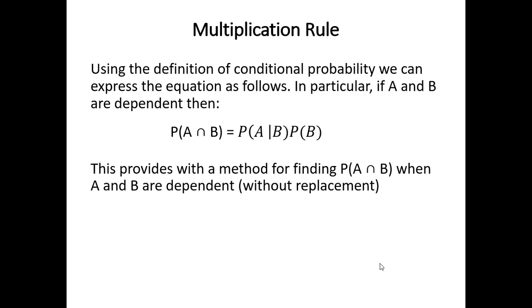Another item that we get out of the definition of conditional probability is a certain multiplication rule that is useful when A and B are dependent. Remember, when A and B are independent, the probability of A intersect B is just the probability of A times the probability of B. But now we have a difference because A and B are dependent. We have the probability of A intersect B equals the probability of A given B times the probability of B. Notice this could easily be flipped around. We could have the probability of B given A times the probability of A. So this gives us a method for finding the probability of an intersection when events are dependent or when there's no replacement.